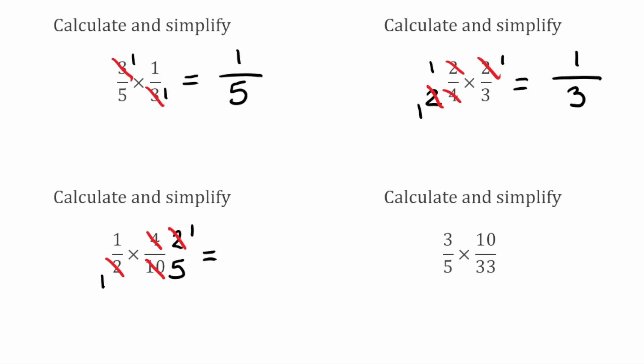Now that we've simplified, we multiply through. We've got 1 times 1, which is 1, and on the bottom 1 multiplied by 5 gives us 5. So our final answer there would be 1 fifth.